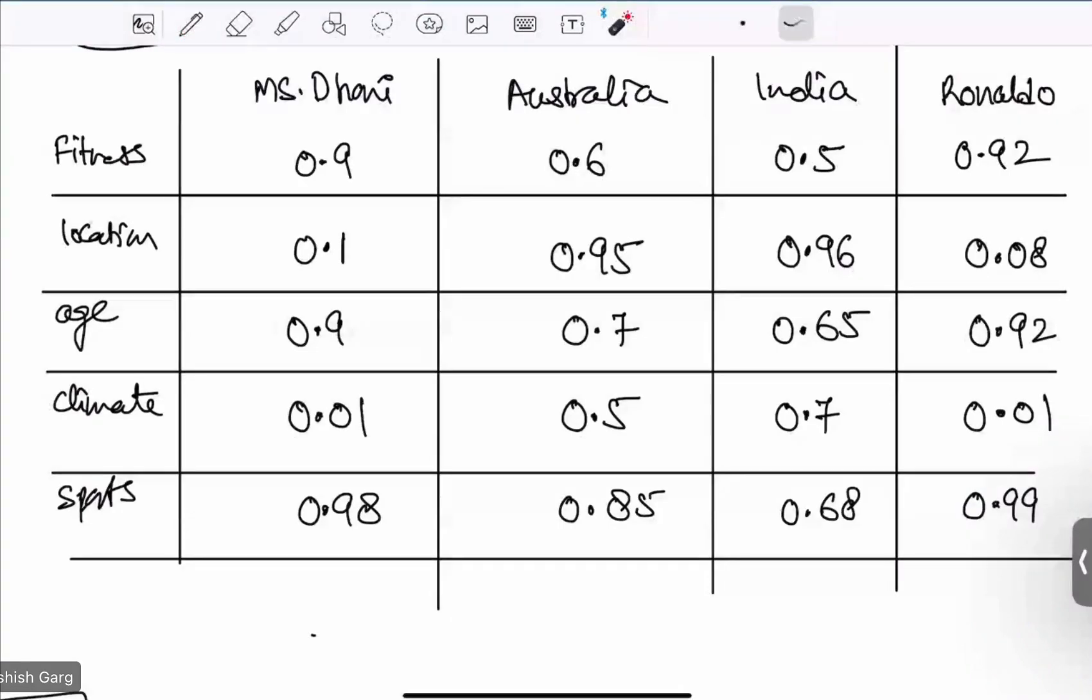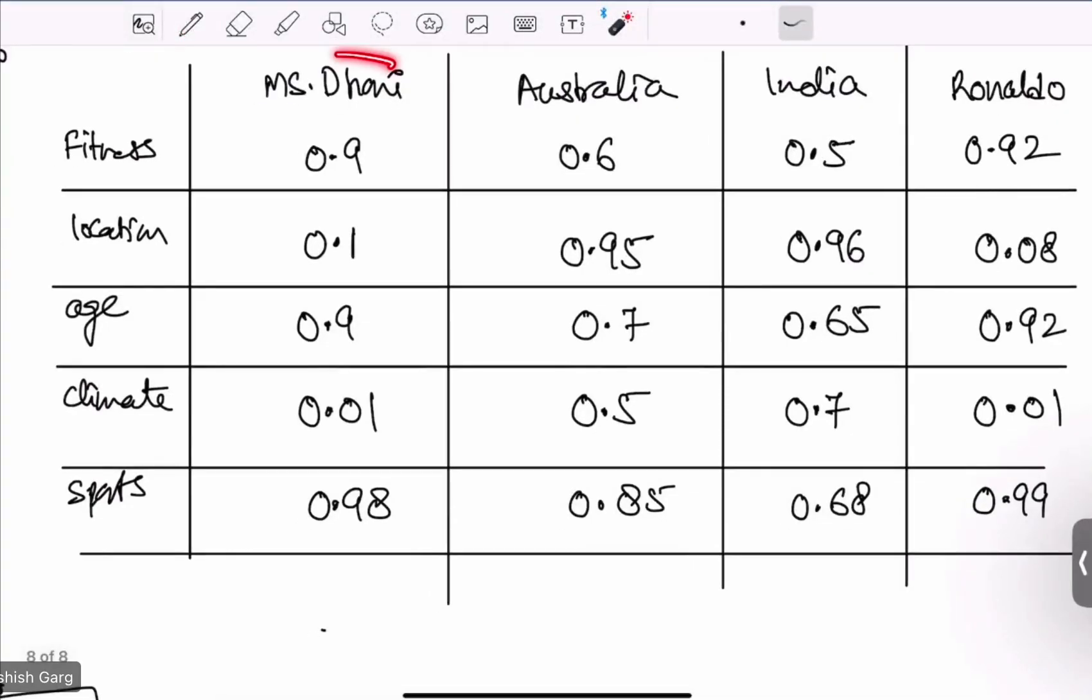In word2vec model, every word can be defined in a form of 32 to maybe 100 or 200 dimension vector. Each word will be given some points or some values for 32 to 100 dimensions.